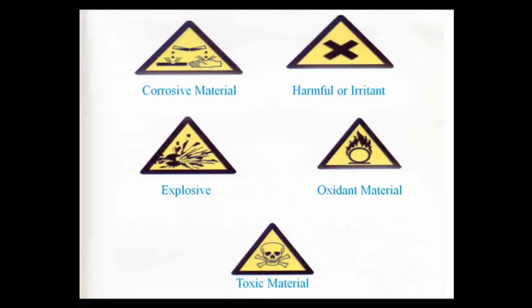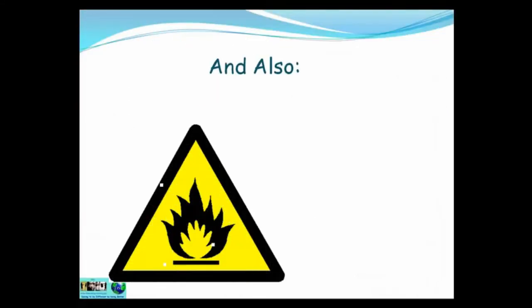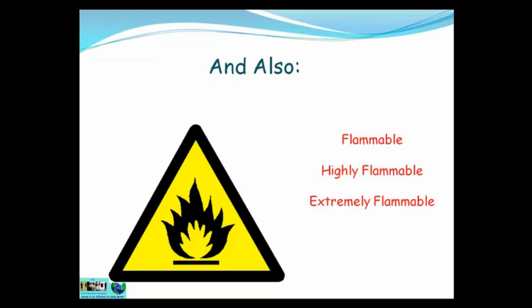Now, there is one missing — and that is flammable substances. They come with three degrees of flammability: flammable, highly flammable, and extremely flammable. Extremely flammable is the sign you'll see on many domestic products such as antiperspirants, deodorants and hair sprays. For ten bonus points — what is the difference between flammable and inflammable? The answer is they mean exactly the same thing. Flammable and inflammable are interchangeable words.